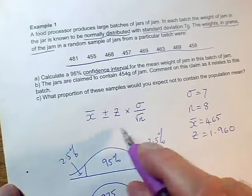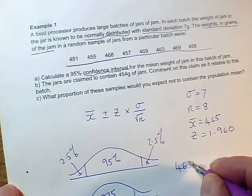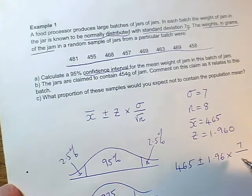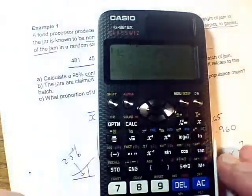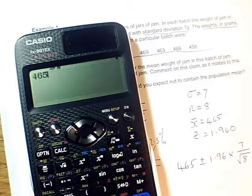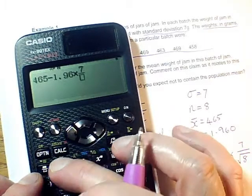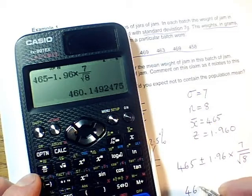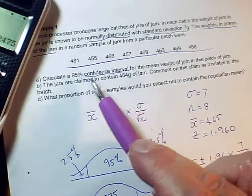So now all I have to do is do x̄ plus or minus z times the standard error. So that's going to be x̄ is 465 plus or minus 1.96 times σ, which is 7 over the square root of n, which is the square root of 8. So on my calculator, if I go into normal mode, I want 465. And for the lower limit, I'm going to do minus 1.96 times 7 over the square root of 8. And that gives me 460.1.